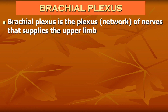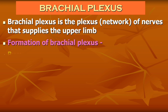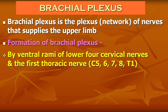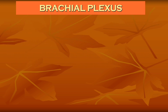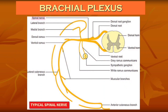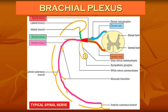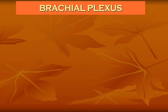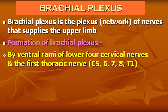The brachial plexus is a plexus or network of nerves that supplies the upper limb. Coming to the formation of the brachial plexus, it is formed by the ventral rami of the lower four cervical nerves and the first thoracic nerve. The spinal nerve is formed by the union of the ventral root and the dorsal root, and it divides into the ventral ramus which runs anteriorly and the dorsal ramus which runs posteriorly. Ventral rami of C5 to T1 spinal nerves contribute to the formation of the brachial plexus.